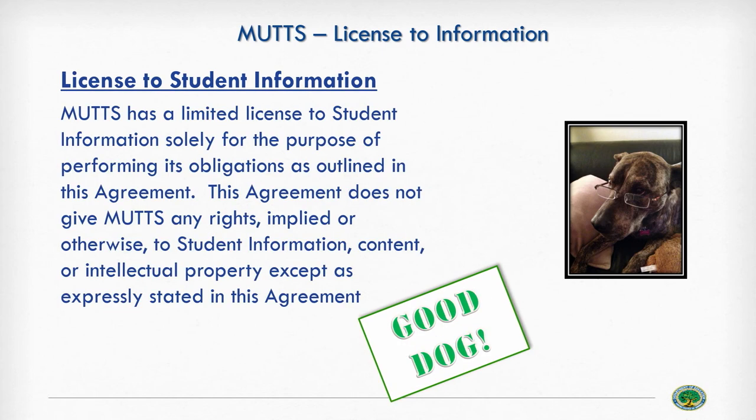A much better provision: MUTTS has a limited license solely for the purpose of performing its obligations as outlined in this agreement — that use restriction we talked about earlier. This agreement does not give MUTTS any rights, implied or otherwise, to student information content or intellectual property except as expressly stated in this agreement. They can use it for the purpose of providing the service and that's about it. A good dog provision.